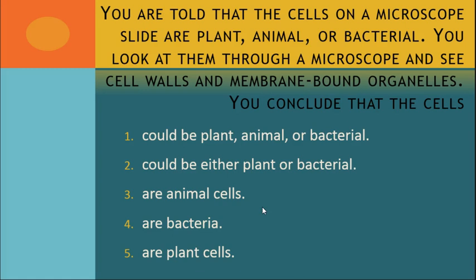Here's your first question. You're told that the cells on a microscope slide are plant, animal, or bacterial. You look at them through the microscope and see cell walls and membrane-bound organelles — you're going to conclude that the cells are... plant cells. This is where we need to start asking ourselves what are the hallmarks of different kinds of cells. It turns out that if you have cell walls and membrane-bound organelles, the only thing that you could be is a plant cell.